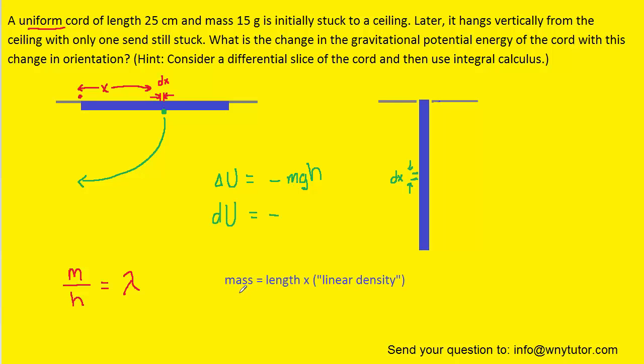The mass of a particular length of the cord would equal whatever length that was multiplied by the so-called linear density. Now we actually figured out the linear density earlier because we took the entire mass of the cord and divided it by its full length, and we had set that equal to this symbol lambda here. So for a differential element, the mass could be that very minute length, which would be dx, multiplied by the linear density, which again is that lambda value. So back up here in the formula, we're not going to plug in m for the mass because that would represent the entire mass of the cord. Instead, we're going to plug in this expression which represents the mass of that small differential element.